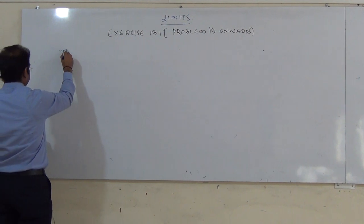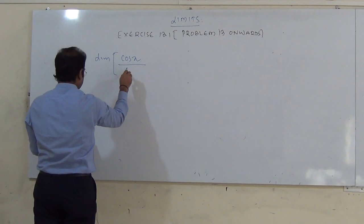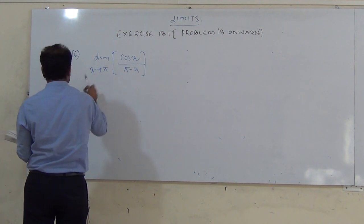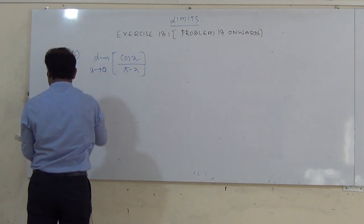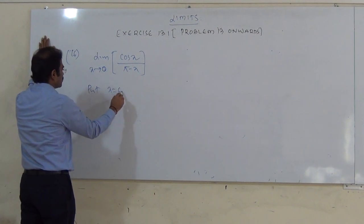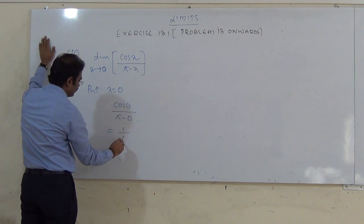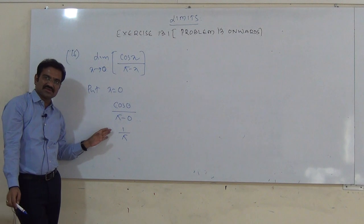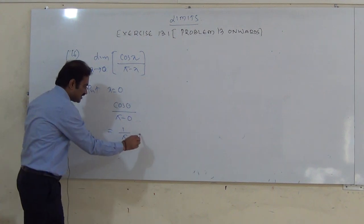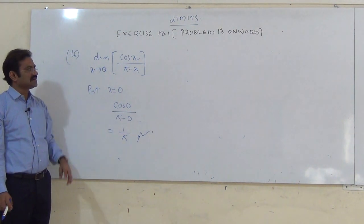16th question: limit of cos x / (π − x) as x tends to 0. Put x = 0: cos(0) / (π − 0) = 1/π. Since this is not 0/0, there is no indeterminate form. This itself is the answer: 1/π.